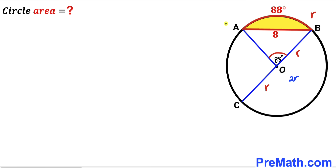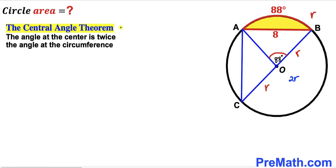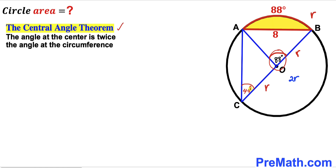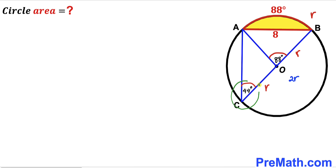In this next step I am going to connect these points A and C. Now let's recall the central angle theorem: the angle at the center is twice the angle at the circumference. Here angle ACB is the angle at the circumference, whereas angle AOB is the angle at the center. So therefore angle ACB is half of 88 degrees, which turns out to be 44 degrees.